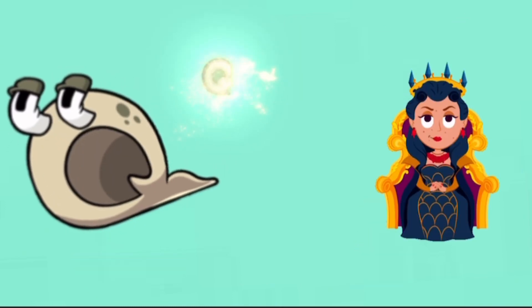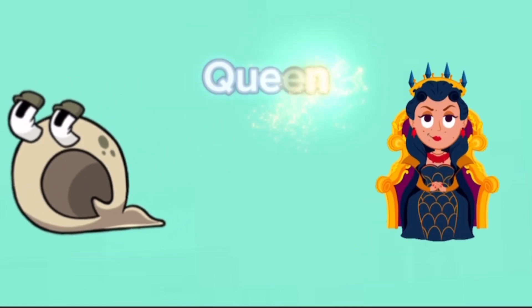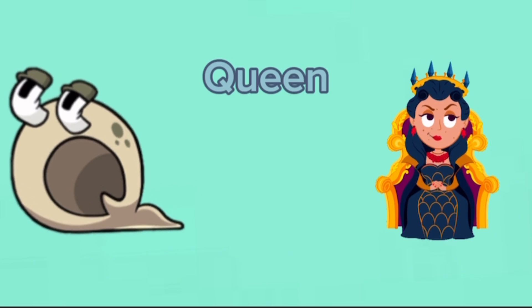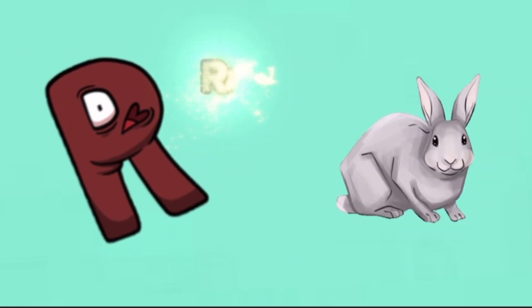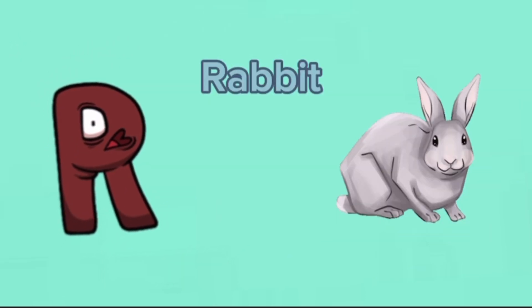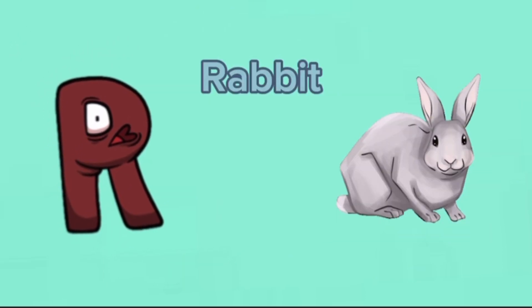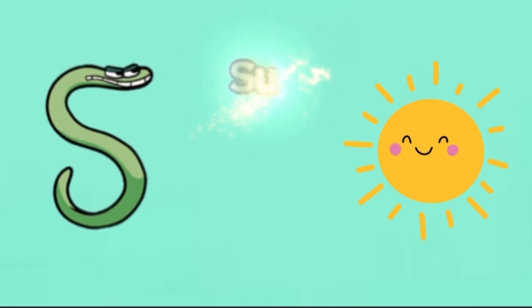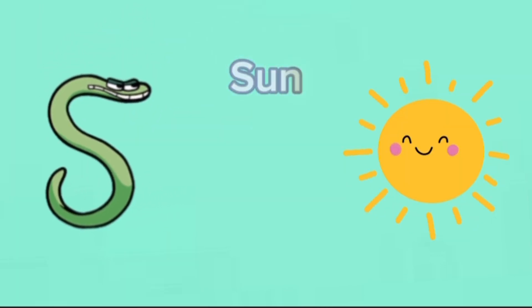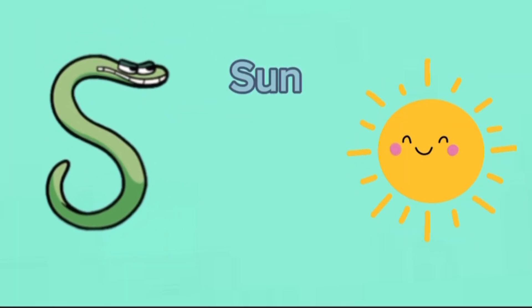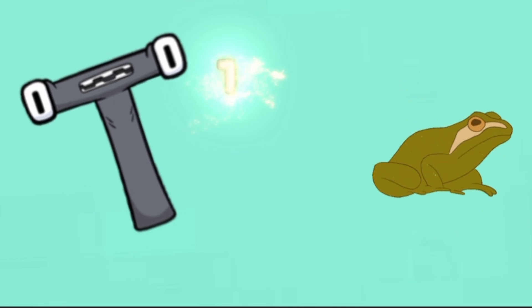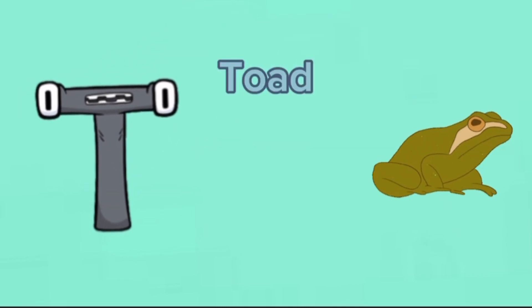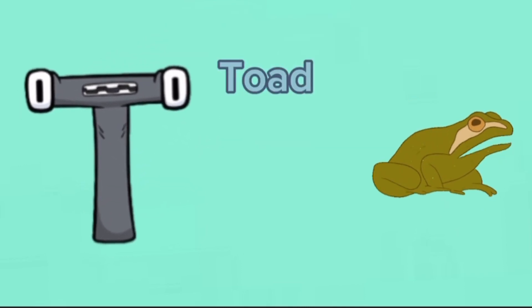Q is for queen, qu-qu-queen. R is for rabbit, r-r-rabbit. S is for sun, s-s-sun. T is for toad, t-t-toad.